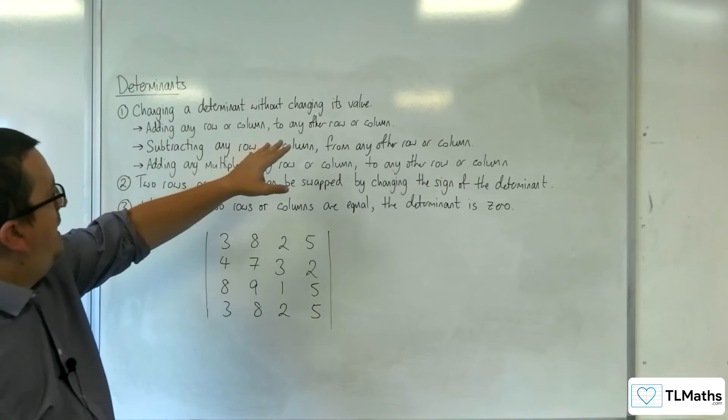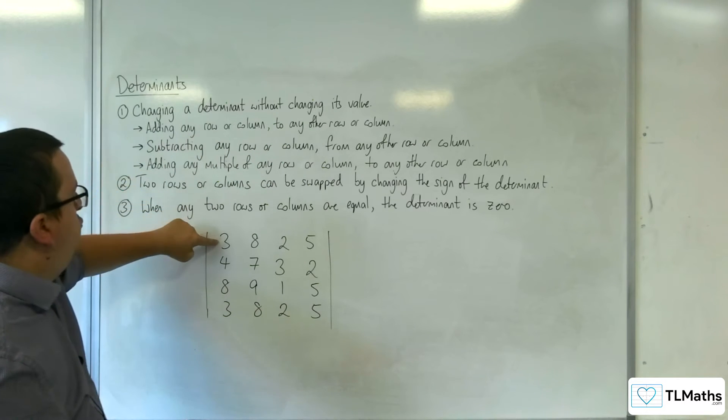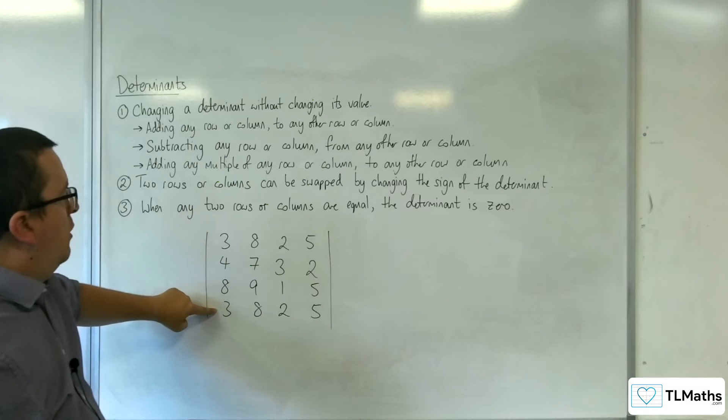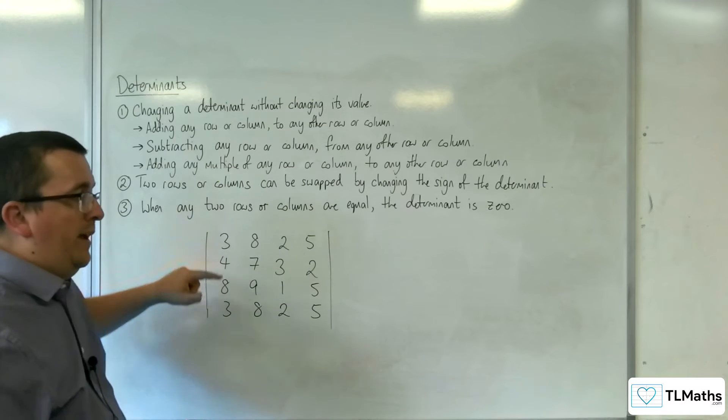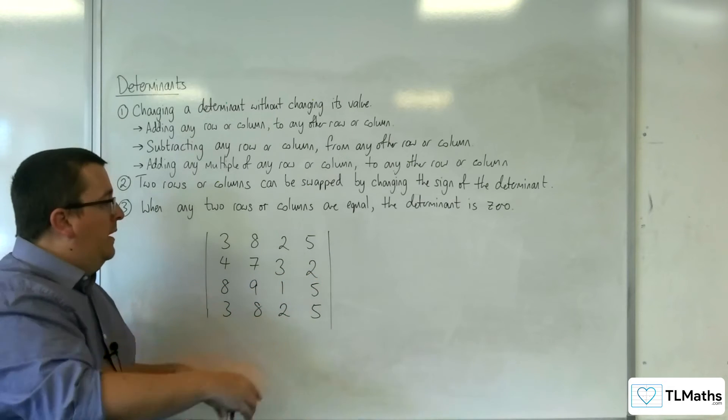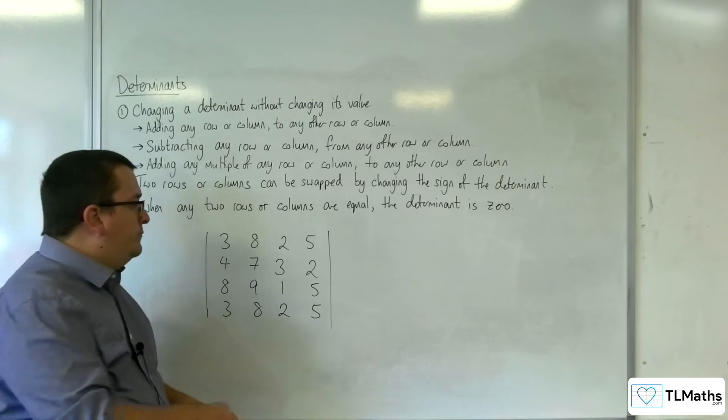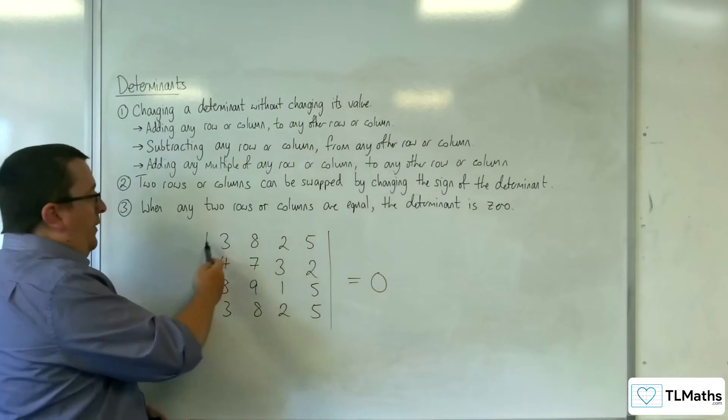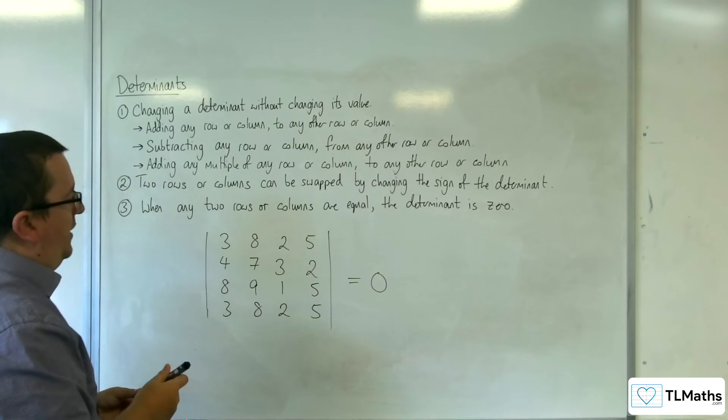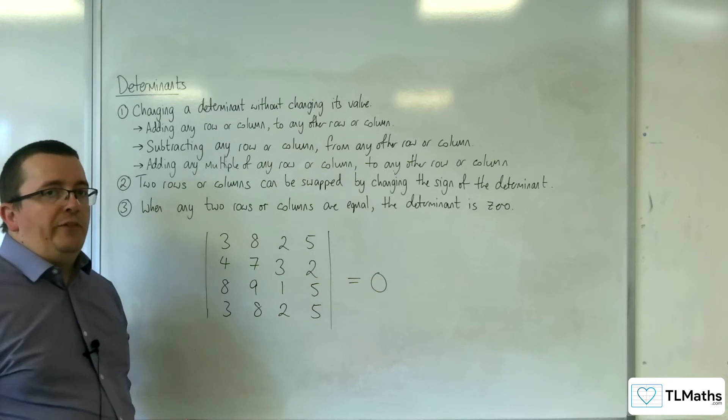If you use one of the previous rules, so let's say you did row 1 take away row 4, then what you would have is you would have 0, 0, 0, 0 in the top row, and so when expanding the determinant, you'd just get 0. So if you spot that one row is the same as another row or one column is the same as another column, then you know the determinant has to be 0.